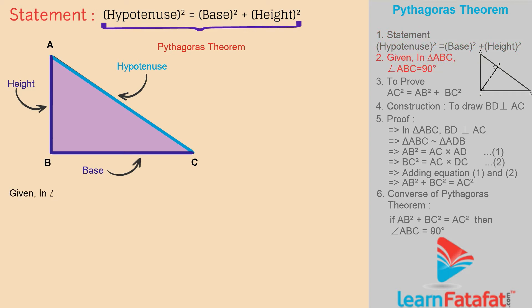Given: In triangle ABC, angle ABC equals 90 degrees. To prove: We have to prove that AC² equals AB² plus BC².